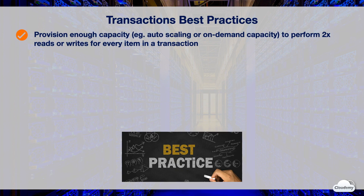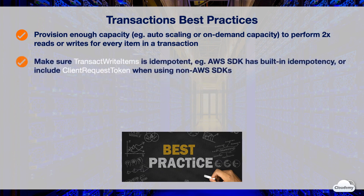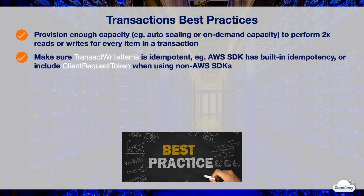Each transaction performs two reads or writes for each item. For the best performance, you should provision enough capacity for these extra operations — for example, by enabling auto scaling or on-demand capacity. You need to make sure the TransactWriteItems operation is idempotent. AWS SDK has built-in idempotent support; for non-AWS SDKs, you should include a client request token for each transaction.